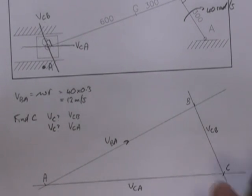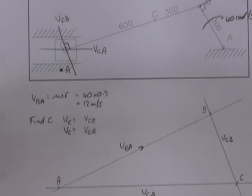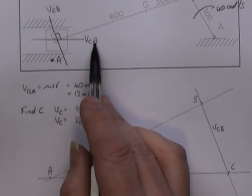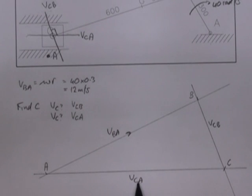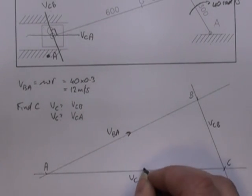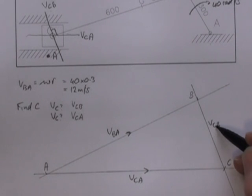We've labeled this. Up here we labeled it as VCA. We've labeled it VCA down here. And we know that the arrow points to the first letter C. There's C. Arrow must go that way. VCB, arrow must point to C being the first letter.